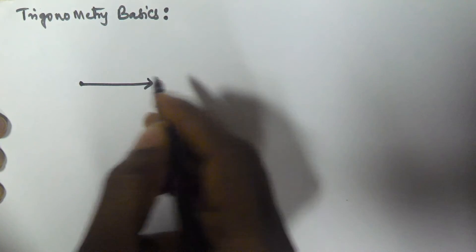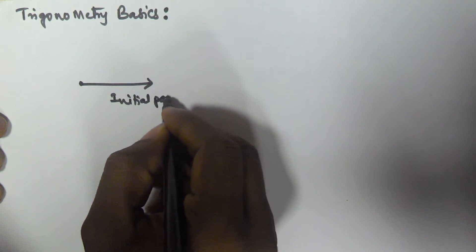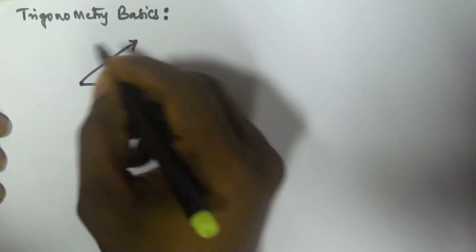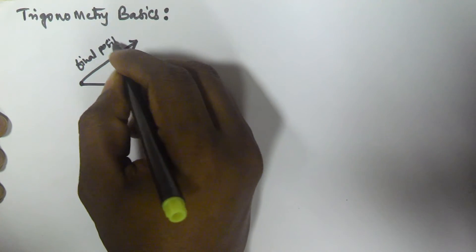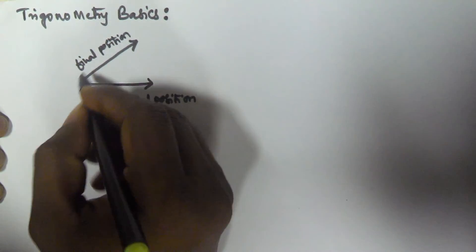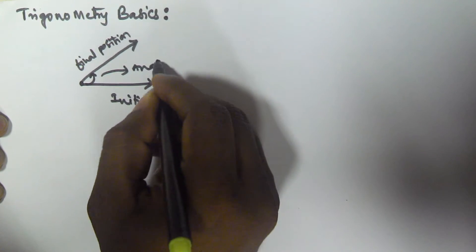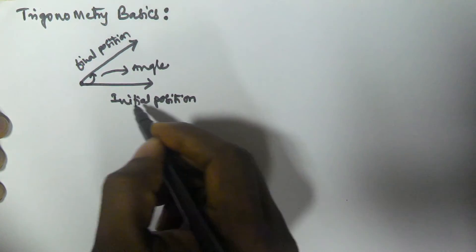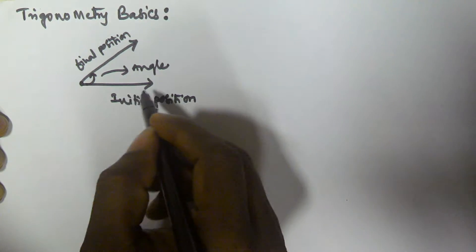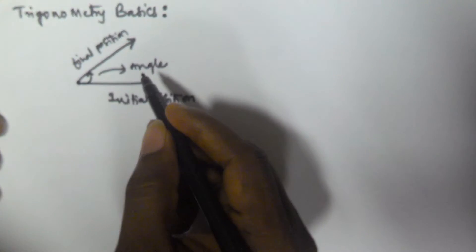An angle is simply the trace of a line from its initial position to the terminal position. So this initial position of the line moves to a final position, and the trace out from its initial position to the final position is called an angle.